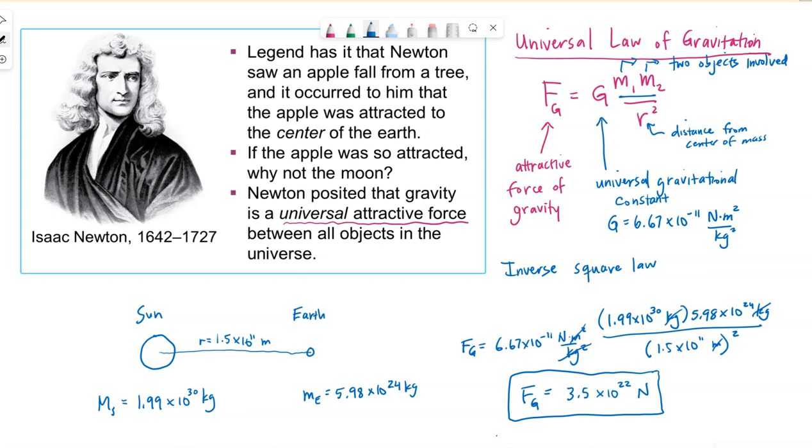One side note, on my calculator I have a button that says EE. This stands for times 10 to the something. So when I put the numbers in my calculator, I do, for example, for G: 6.67 EE negative 11. I know some of you probably have the 10 to the button, that also works just fine. Practice getting some of these numbers in because they can be tricky and easy to miscalculate.